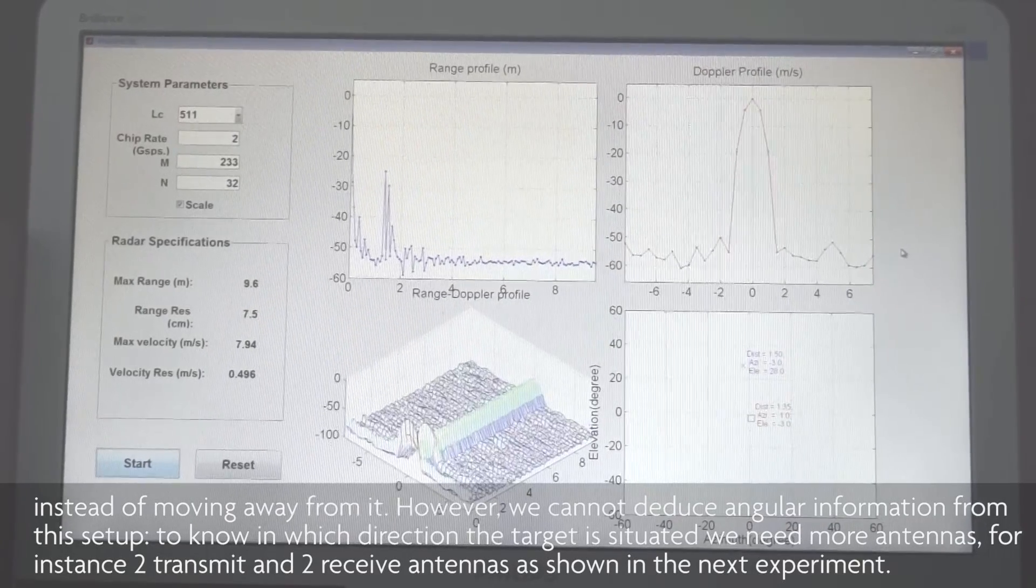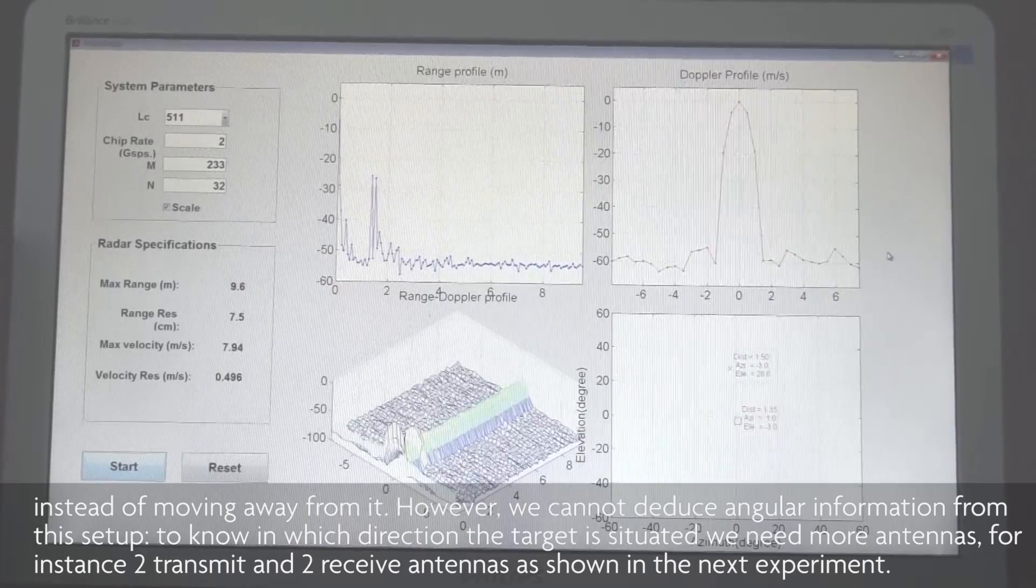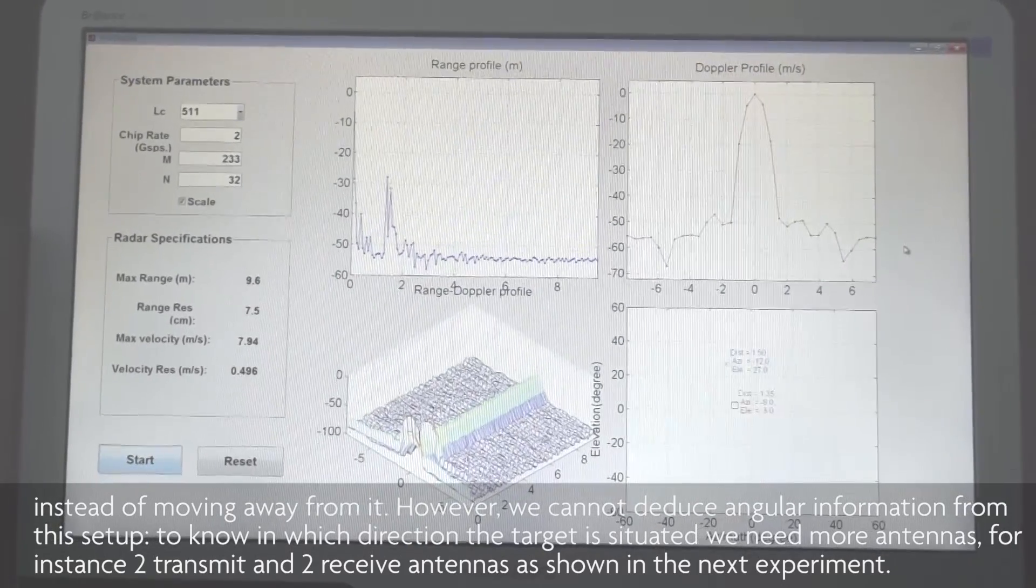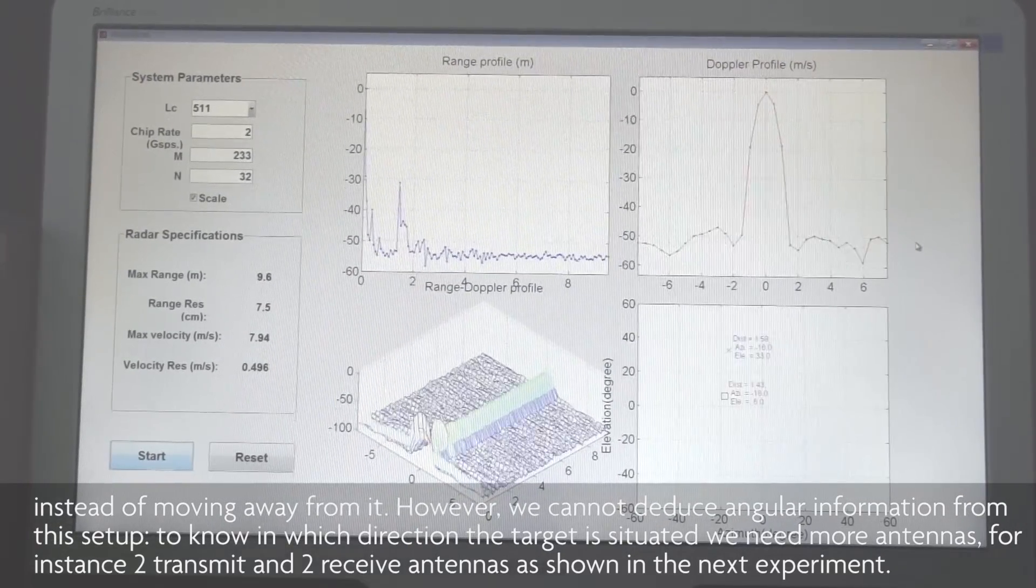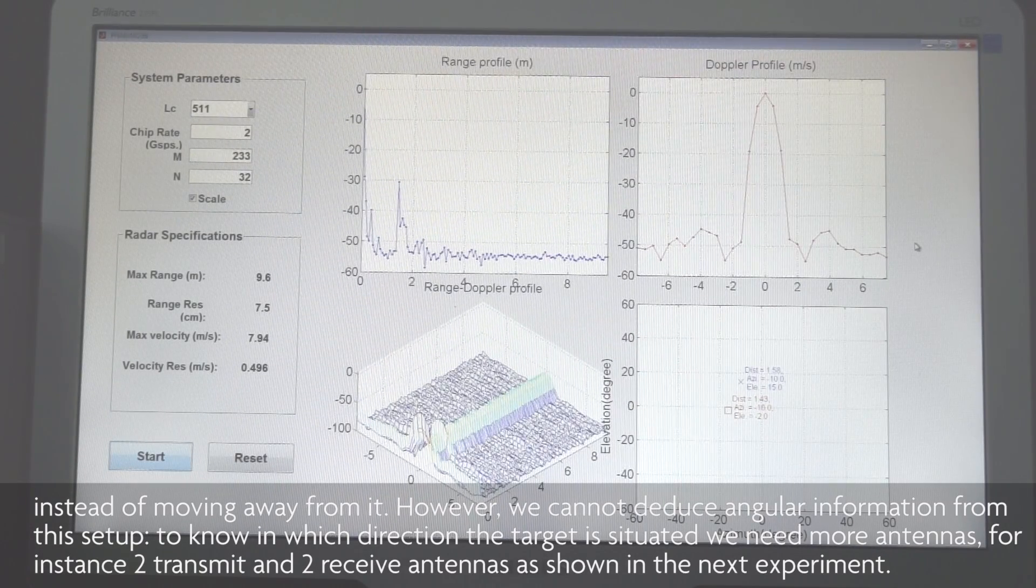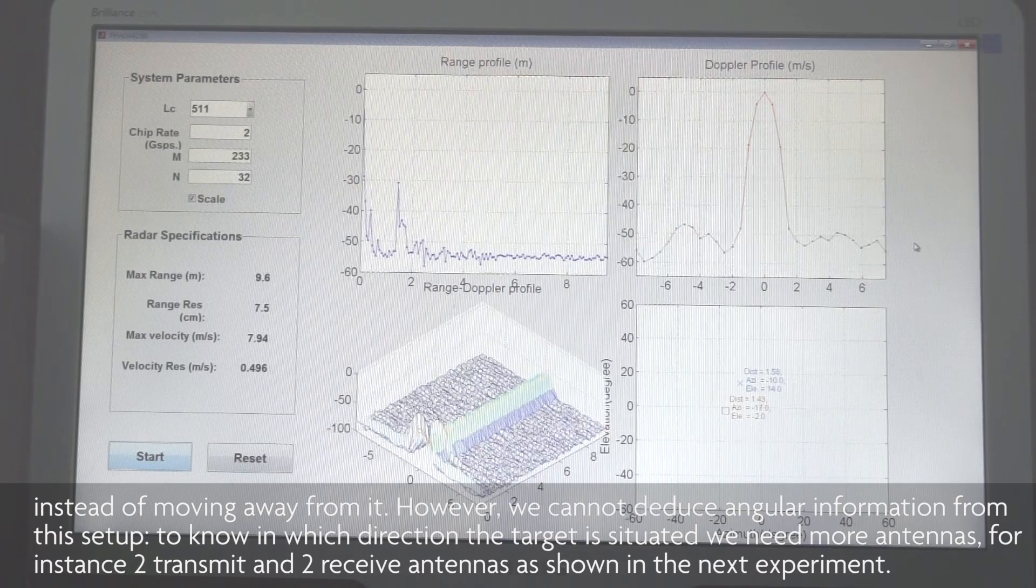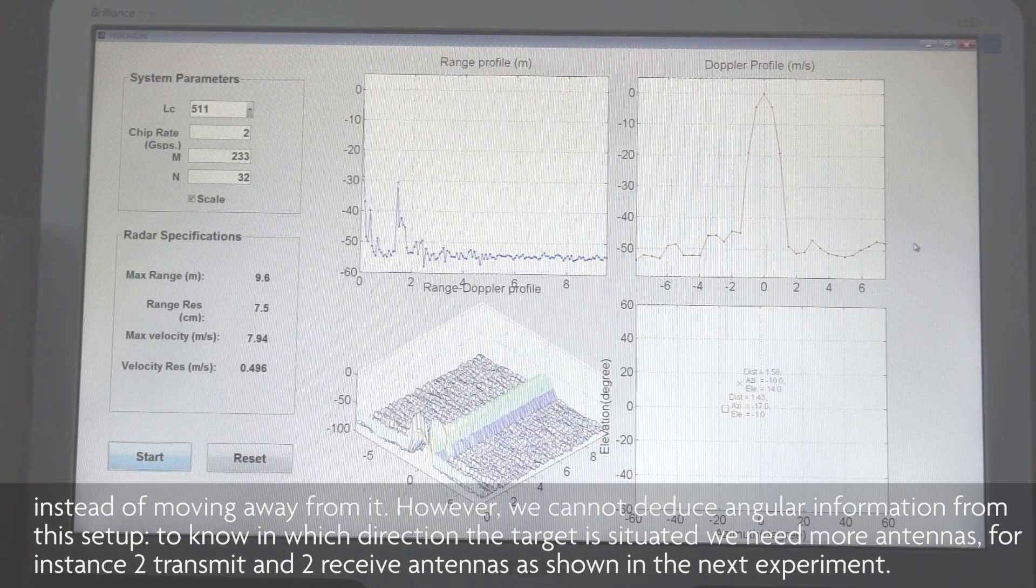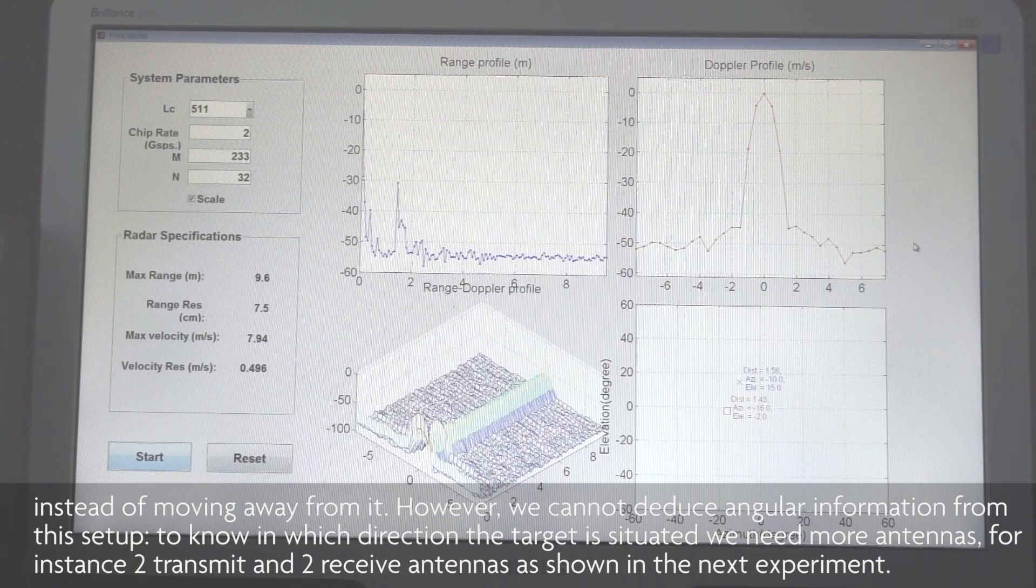However, we cannot deduce angular information from this setup. To know in which direction the target is situated, we need more antennas, for instance, two transmit and two receive antennas, as shown in the next experiment.